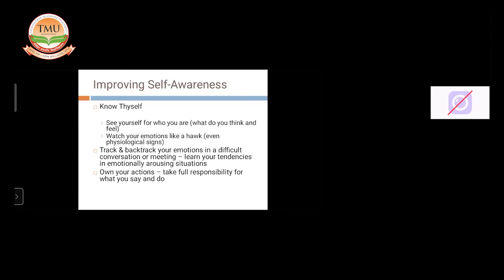One should keep a track and backtrack emotions in a difficult conversation or meeting, which helps you to learn your tendencies in emotionally arousing situations. You should be responsible for your actions. Take full responsibility for what you say and do. Only then you can achieve self-awareness.